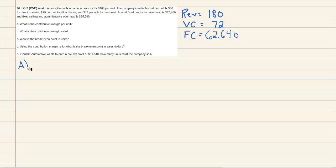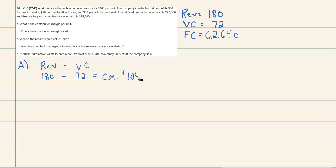Part A wants to know our contribution margin per unit. We take our revenue per unit and subtract variable cost per unit. In our problem, revenue was $180 per unit and variable cost was $72, so our contribution margin is $108 per unit — every unit we sell contributes $108 towards covering our fixed cost. Part B wants to know the contribution margin ratio. We take the contribution margin and divide it by our revenue per unit, and we get 60%.